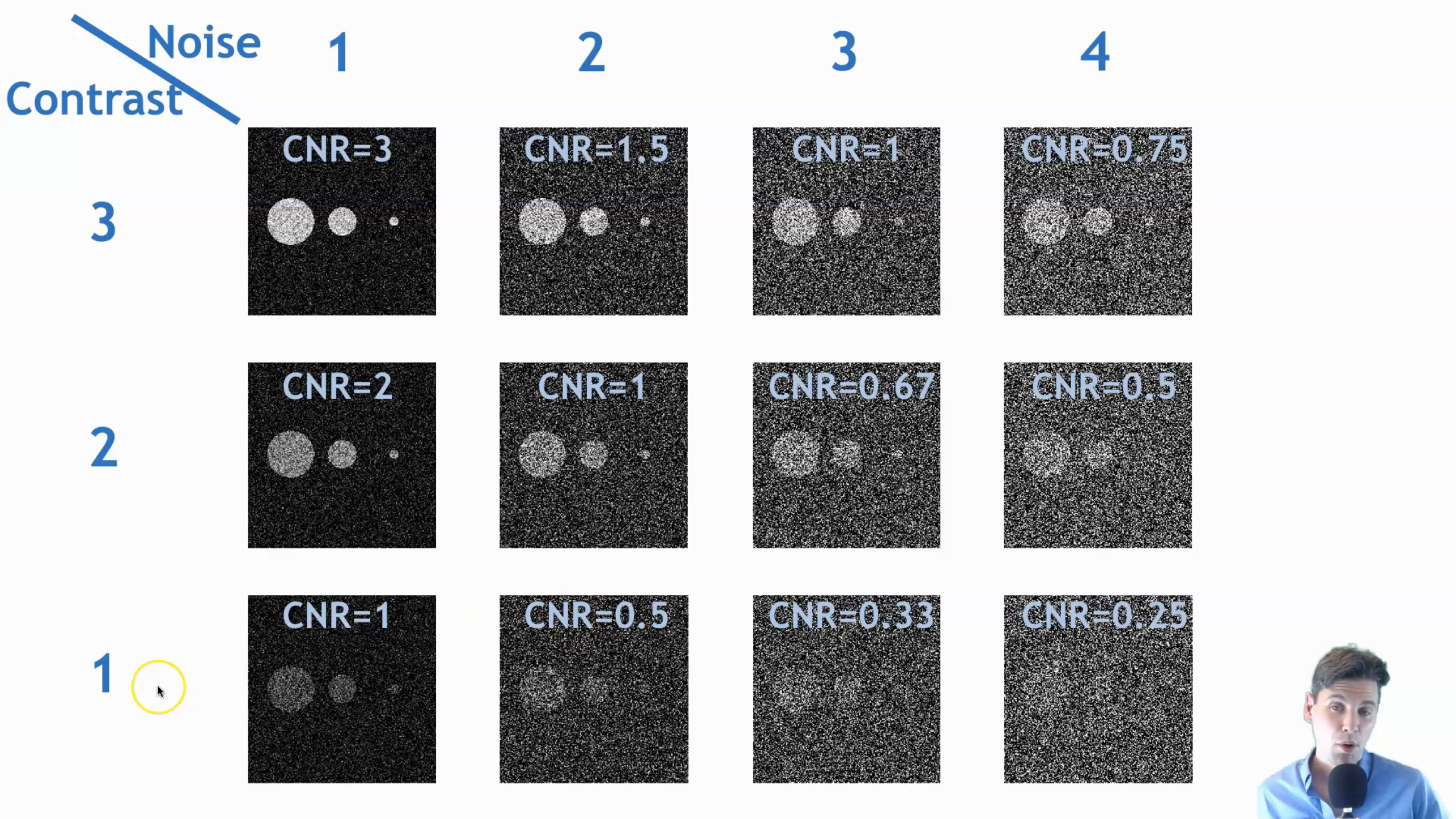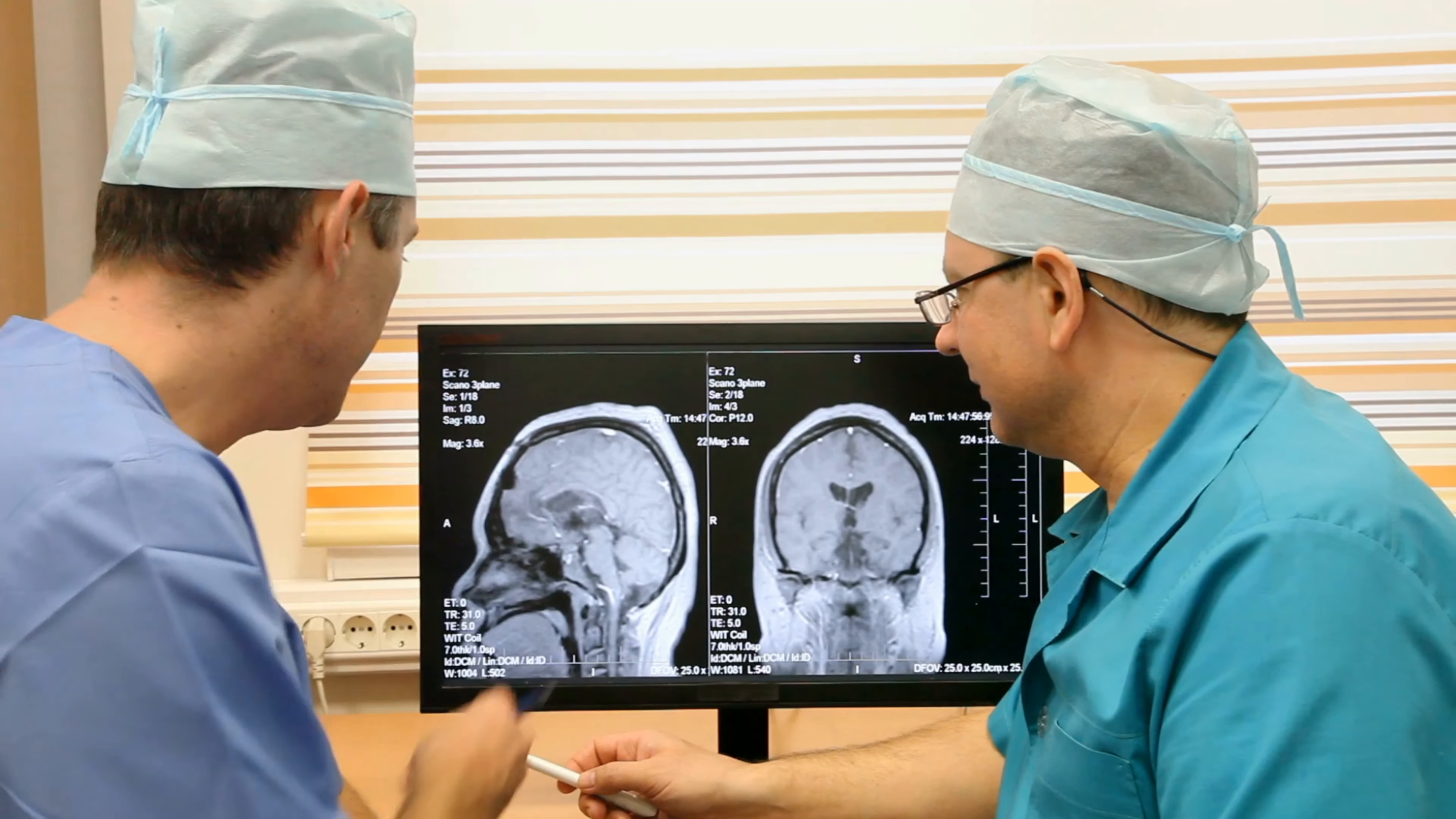Finally, we have one more case where again, we have the contrast additionally decrease. So now the contrast is one. And then when we come here, it becomes even difficult if you don't know where those objects are, it becomes even difficult to visualize any of the objects in this last case with a very low contrast to noise ratio.